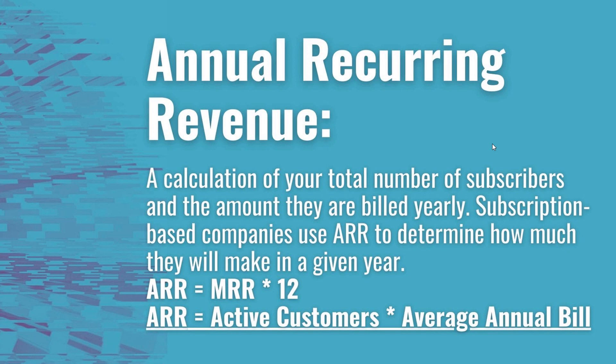For example, if you have 100 subscribers and on a yearly basis they're all billed $10, then your Annual Recurring Revenue is $1,000. Subscription-based companies use this to determine how much they're going to make in a given year, and you can use two different formulas.